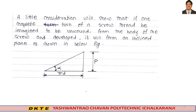A little consideration will show that if one complete turn of a screw thread is imagined to be unwound from the body of the screw and developed, it will form an inclined plane, as shown in this figure. The complete thread is unwound onto a horizontal plane to give an inclined plane, where pi·D is the circumference of the thread and P is the pitch.